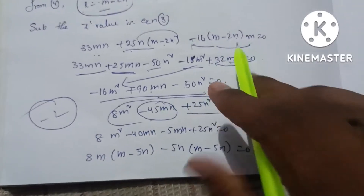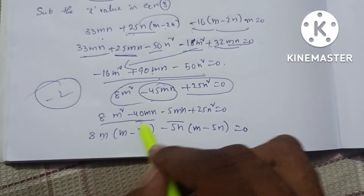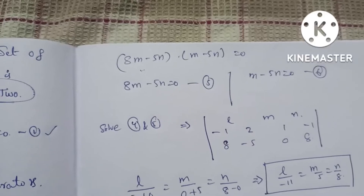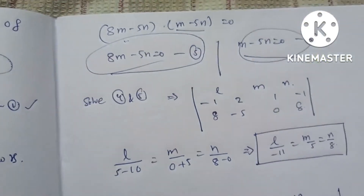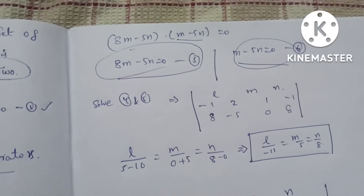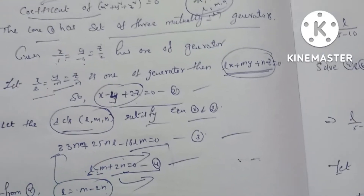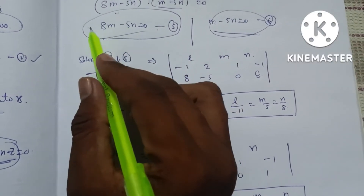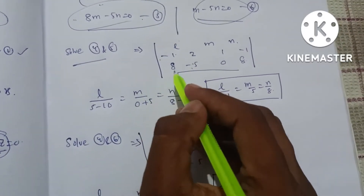Factoring: −45mn = −40mn − 5mn, so 8m(m − 5n) − 5n(m − 5n) = 0, giving (8m − 5n)(m − 5n) = 0. This yields two cases: m = 5n/8 (equation 5) and m = 5n (equation 6).